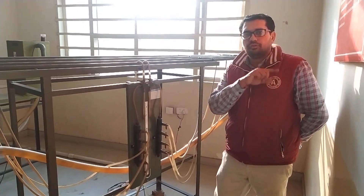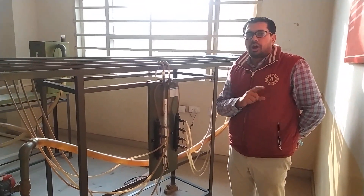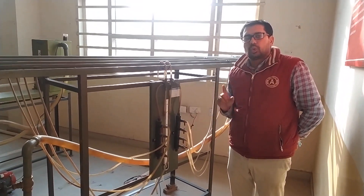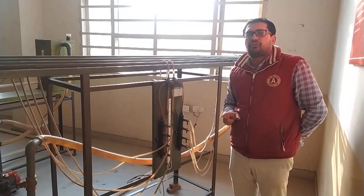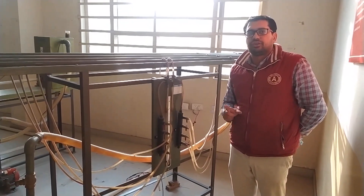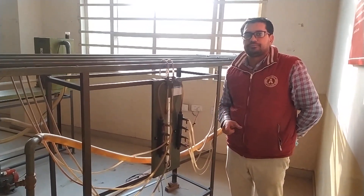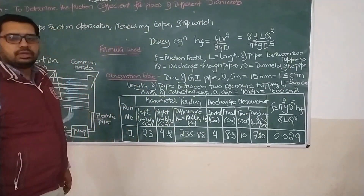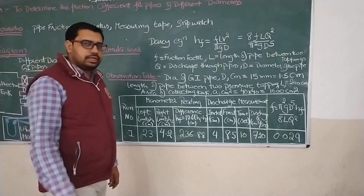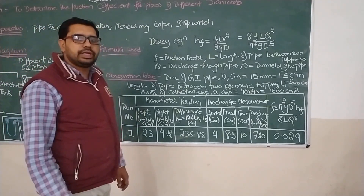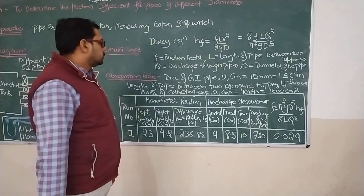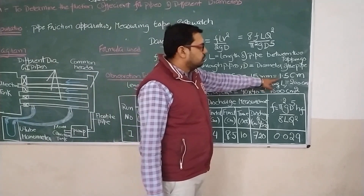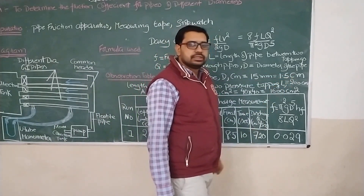Now we are moving back to our observation table. We will note down the readings and perform the required calculations for finding out the coefficient of friction. So this is our observation table. We have performed one reading corresponding to the 15 mm pipe. The diameter of the GI pipe is 15 mm, which is equal to 1.5 cm.